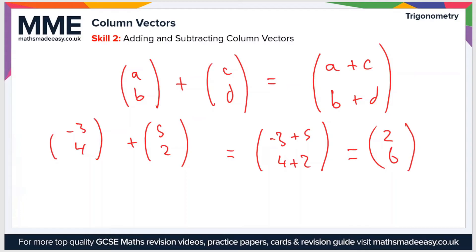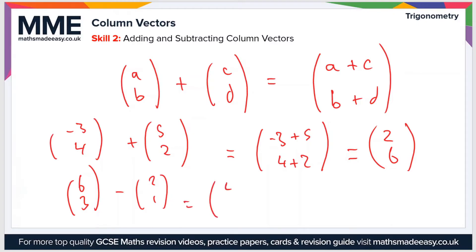Similarly, if we wanted to subtract vectors — using another example — if we have (6, 3) minus (2, 1), then we once again just subtract the x and the y components separately. So that would become (4, 2).